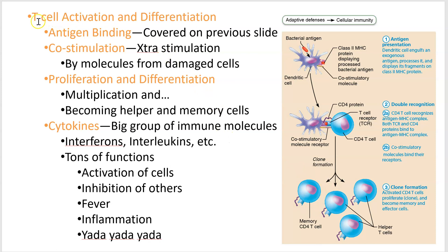To summarize: first, bind to the antigen. Then co-stimulation — other molecules released from virus-infected cells. When you bind to the antigen and get stimulated by damage or distress molecules, you get geared up for proliferation and differentiation — becoming more than one thing. So you can become helper T cells or memory cells.